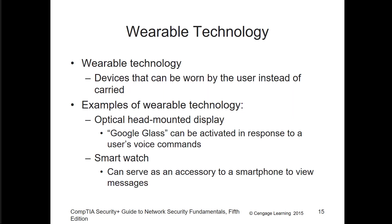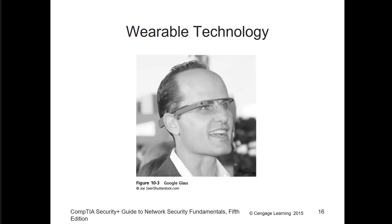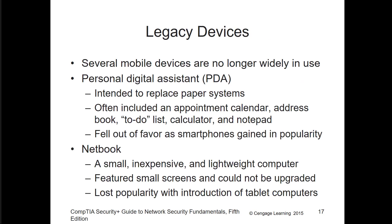Wearables could be things like Google Glasses, an iWatch, or any type of wearable device that has a network connection that can send and receive data. Here's an example of wearable — these are Google Glasses. We also have older legacy devices like PDAs, PalmPilots, Notebooks, and Netbooks. These are all older legacy devices that don't really do a whole lot anymore.